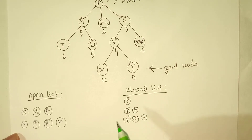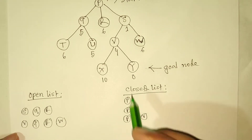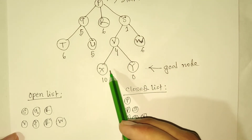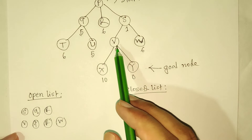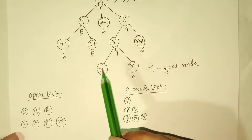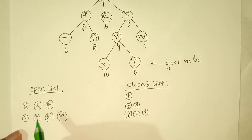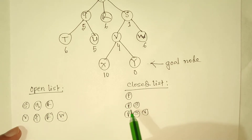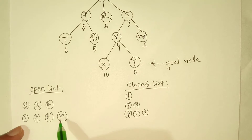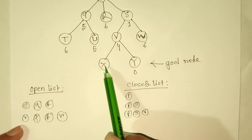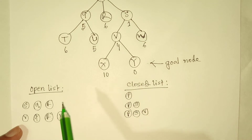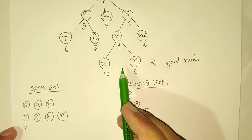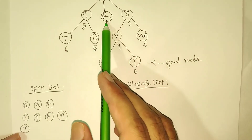Since we haven't found our goal node yet we perform the algorithm further. After visiting V we can go to nodes X and Y, so the path for X and Y is opened by visiting V. We add X and Y to our open list. The remaining nodes were Q, R, and W, so now we have five nodes: Q, R, W, X, and Y. Arranging by heuristic value smallest to largest: Y first (heuristic 0), then Q, then R, then W, then X.